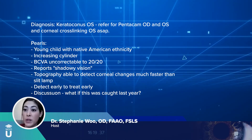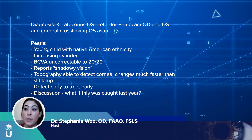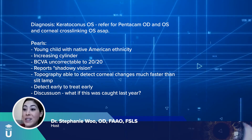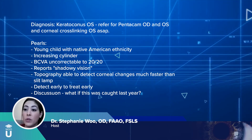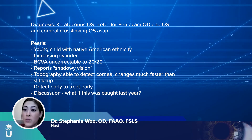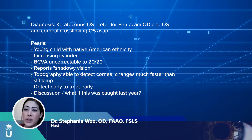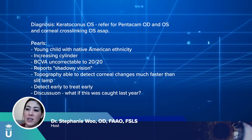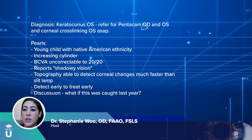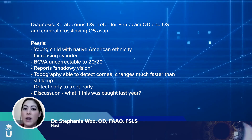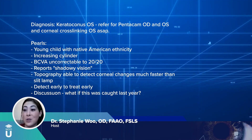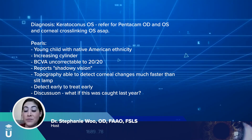If this had been caught years later — she's 14 with a K max of 50 — she could have advanced significantly and maybe not even been a candidate for crosslinking, potentially leading to scarring, high dropout, or need for a transplant in the future. So if you have that patient where something just doesn't feel right, something just seems off — I definitely recommend doing a topography to check and see what's going on.